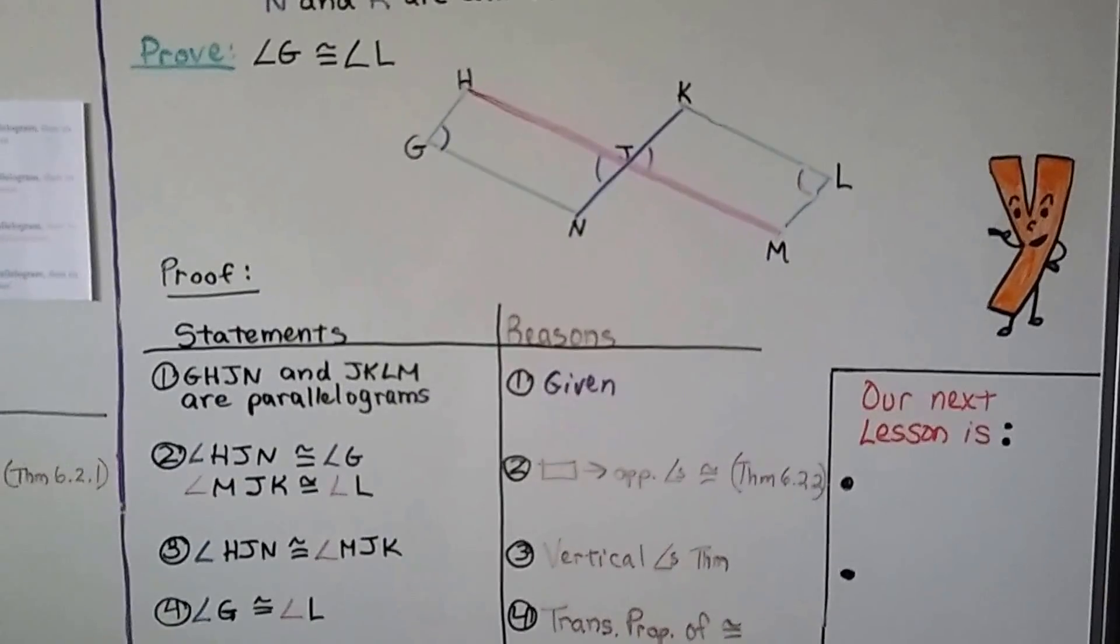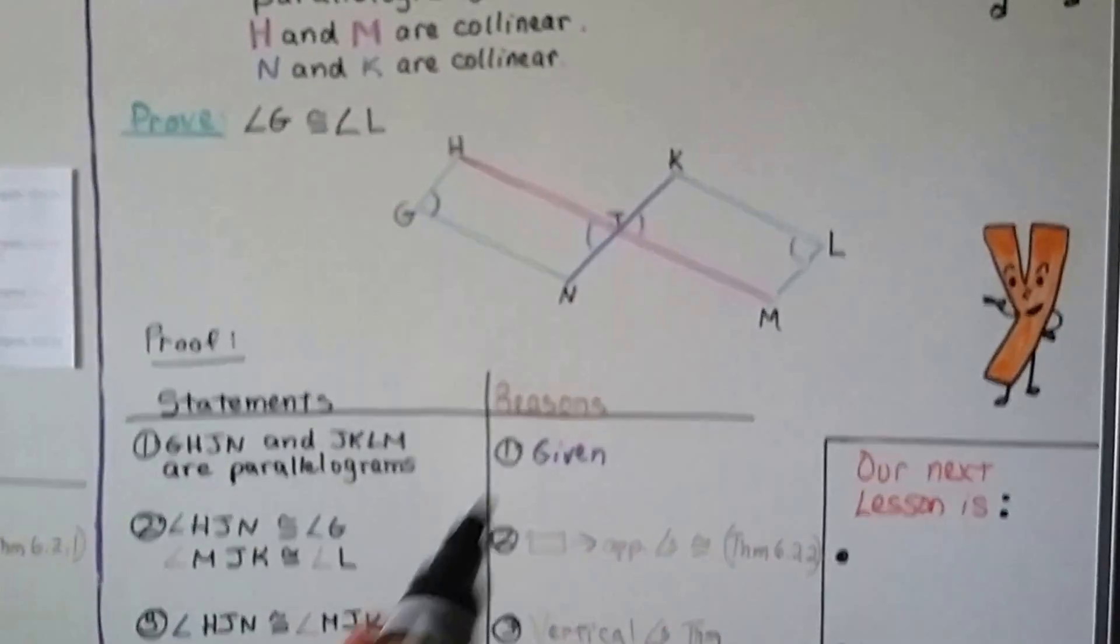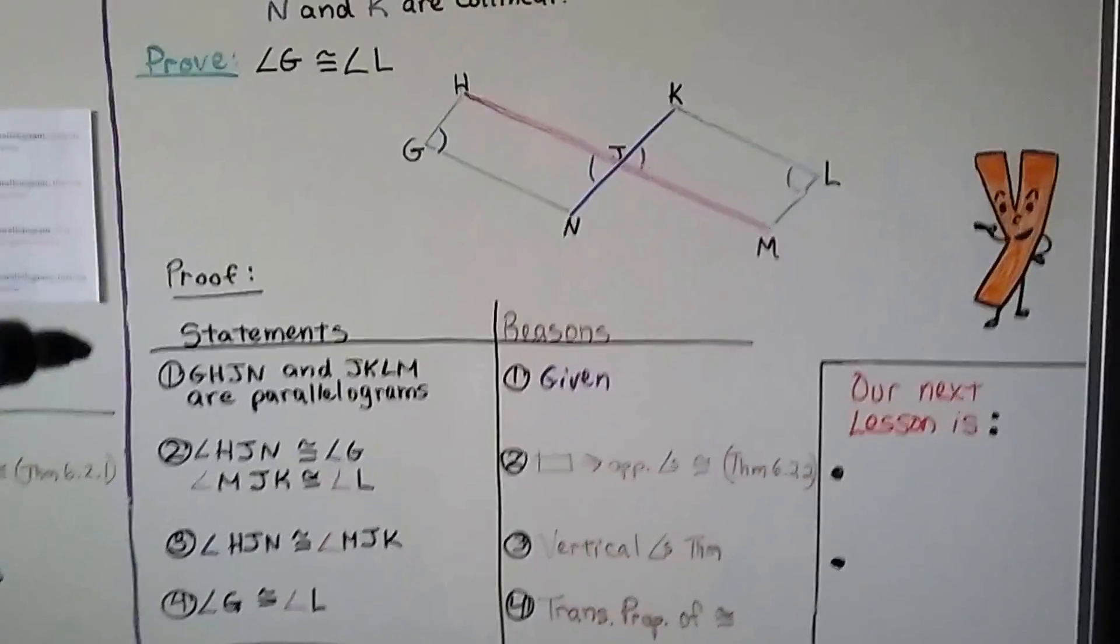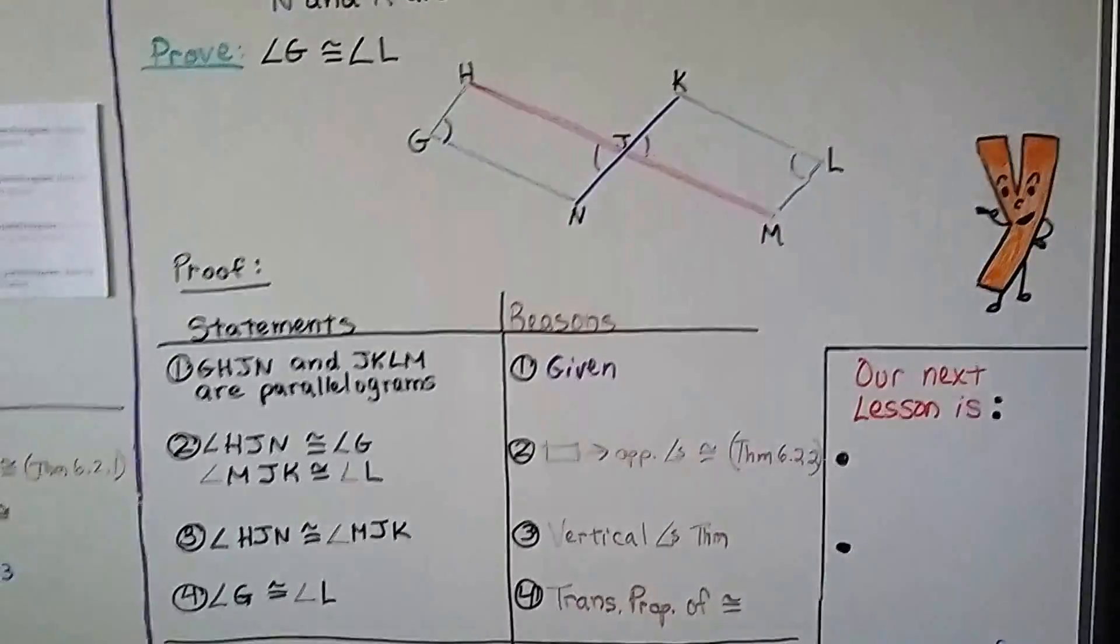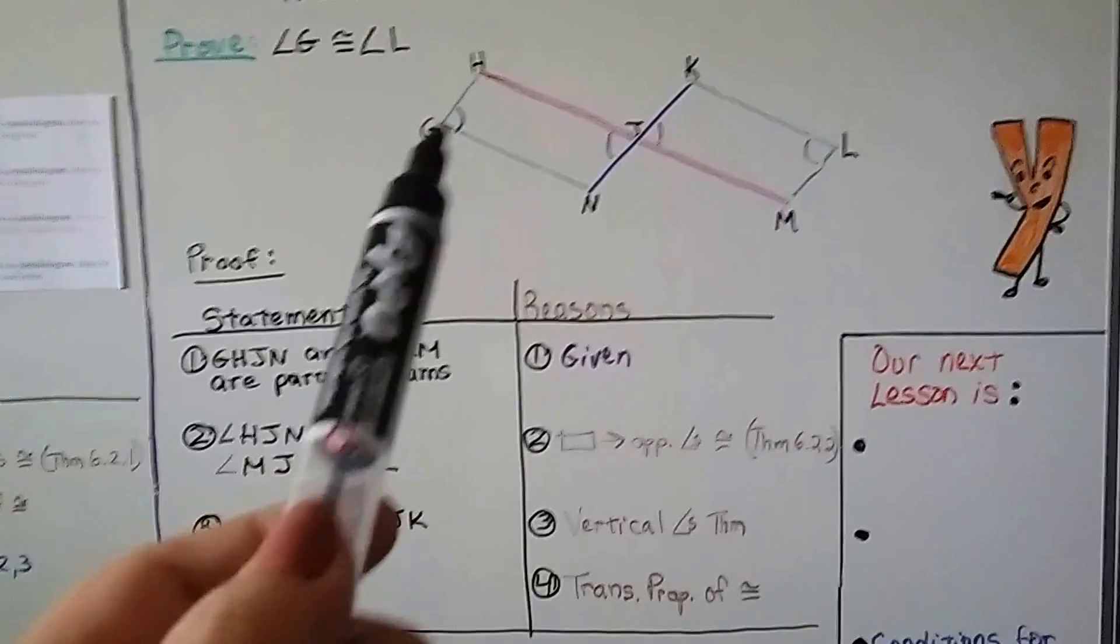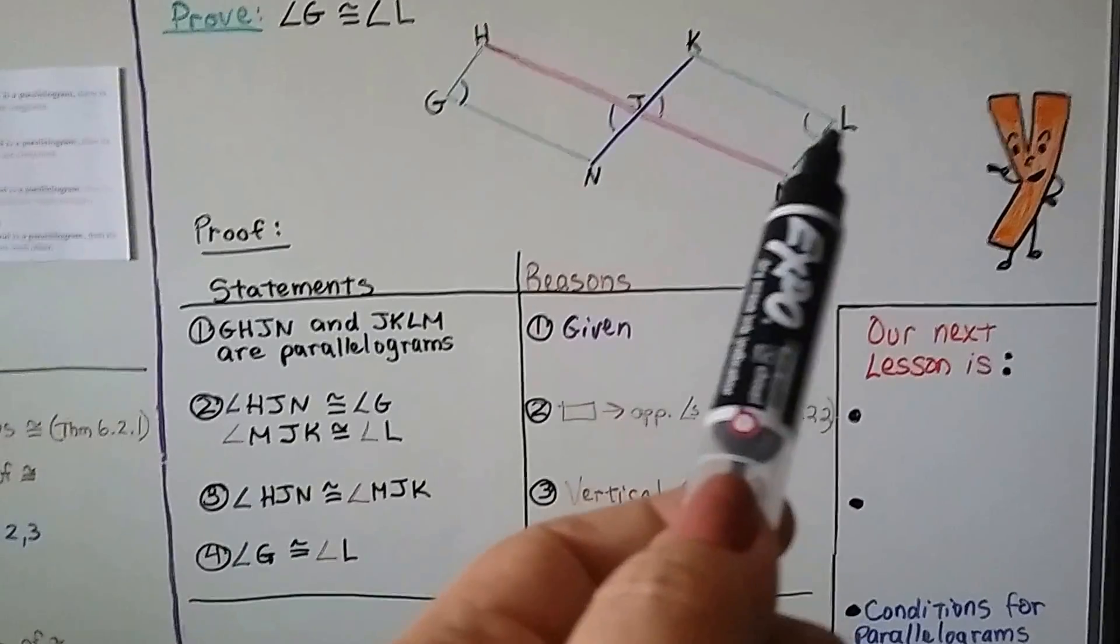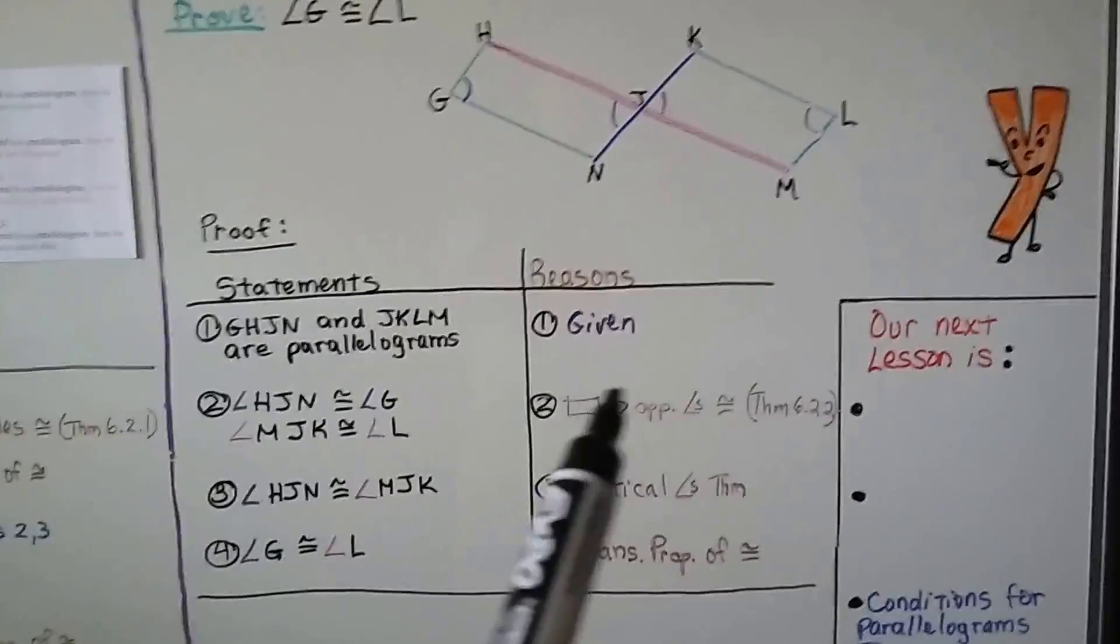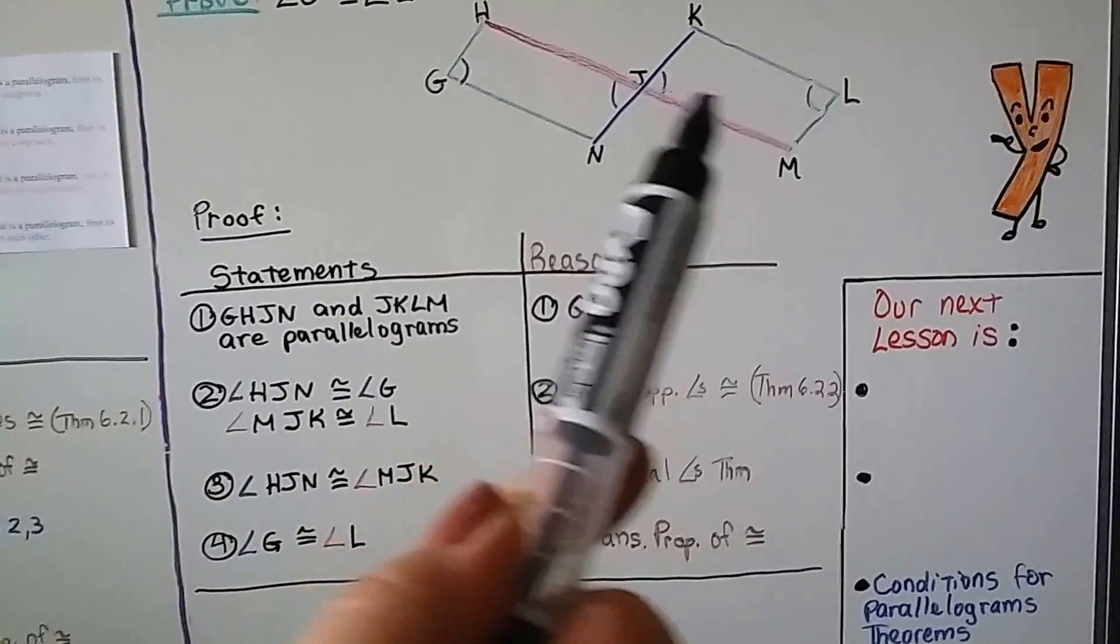So we have a very short little proof. We've got GHJN and JKLM are parallelograms. Well, that was given. Number 2 says angle HJN, this one right here, is congruent to angle G, this one here. And MJK, this one here, is congruent to angle L, this one here. Because of our second theorem that the opposite angles are congruent. That's going to be congruent, and these are going to be congruent.